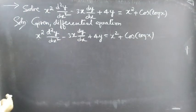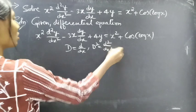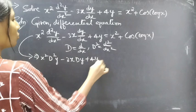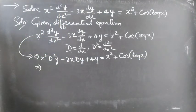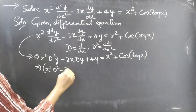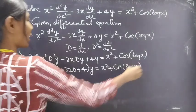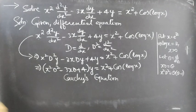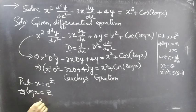Here we are having variable coefficients. We are going to reduce this equation to an equation with constant coefficients by making a substitution. This equation can be written as (x²D² minus 3xD plus 4)y equal to x² plus cos(log x), which is a Cauchy's equation. Now we need to make the substitution: put x equals e^z, then log x equals z for x greater than 0.